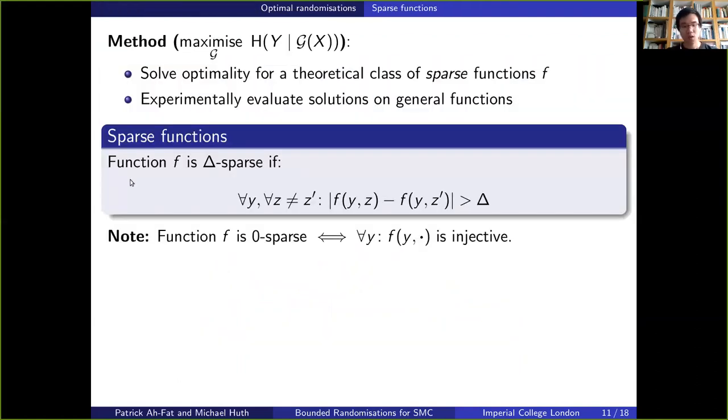So when relaxing this independence assumption, we end up again with the difficult problem of maximizing h of y given g of x. What we decided to do is to solve this optimization problem for a particular class of sparse functions f, which we define next, and to then experimentally evaluate these solutions on general functions.